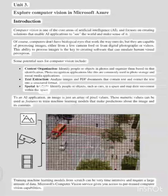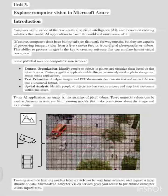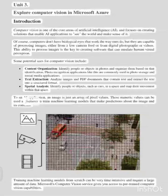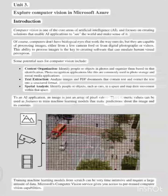To an AI application, an image is just an array of pixel values. These numeric values can be used as features to train machine learning models that make predictions about the image and its contents.